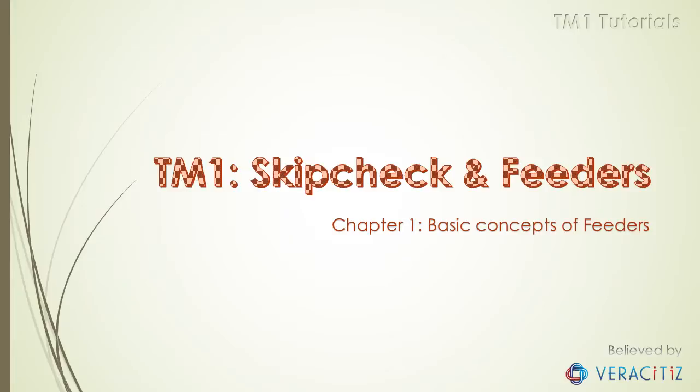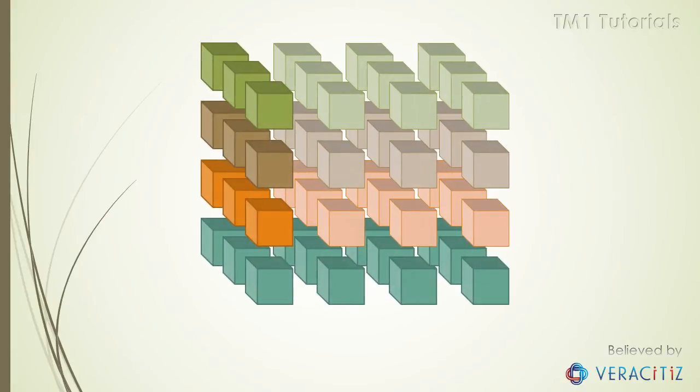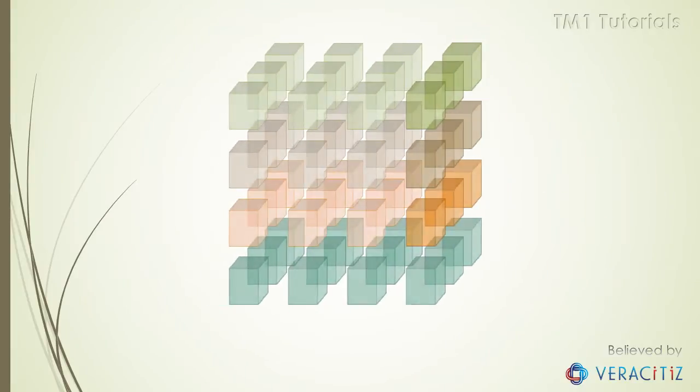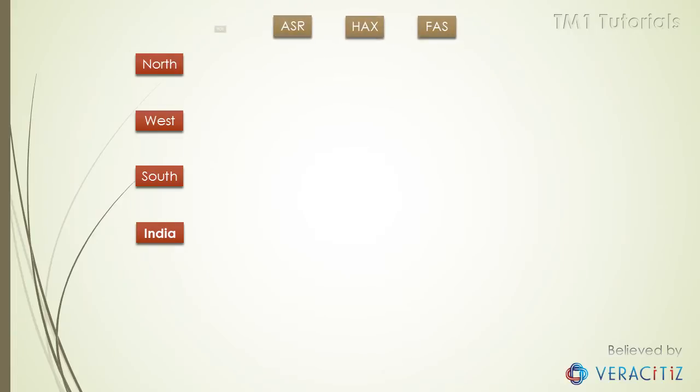The sparse consolidation algorithm of TM1 is used to speed up consolidation calculations in cube. Let's take an example of typical sales plan cube. Here we have three conventional dimensions. First is geography, which has zones as leaf level items that get consolidated to India. Second is product dimension, where product categories as leaf level elements get consolidated to total products. The final dimension has measure elements.